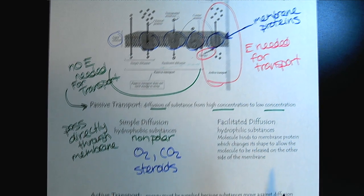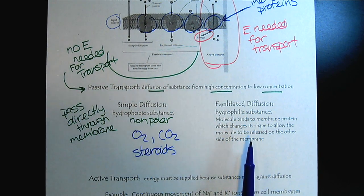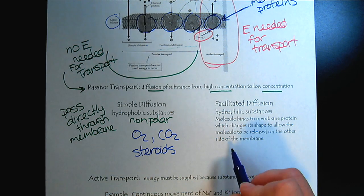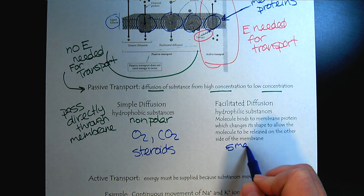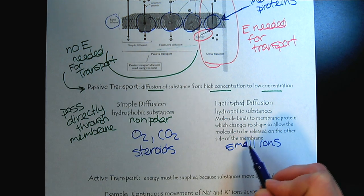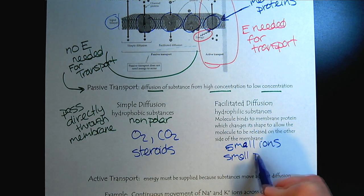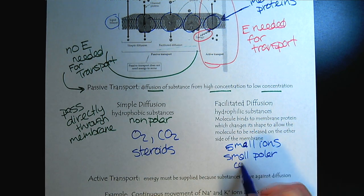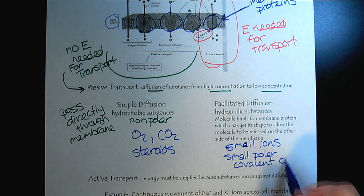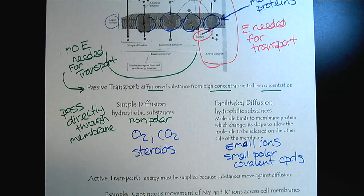So what kind of substances are we going to require facilitated diffusion to get through the cell membrane? This is going to be small ions and small polar covalent compounds. So these are both passive forms of transport.